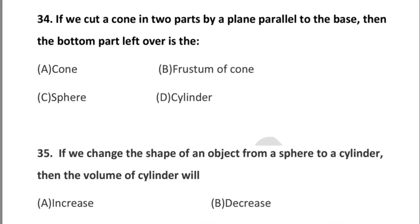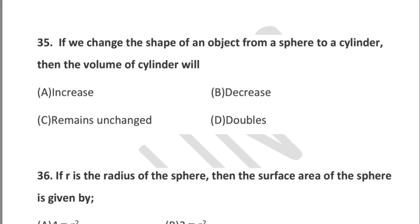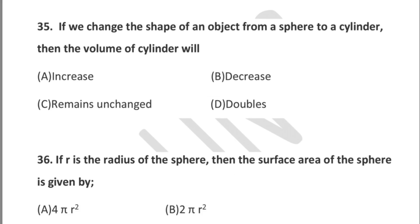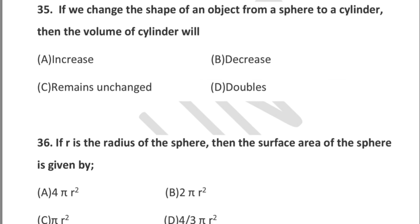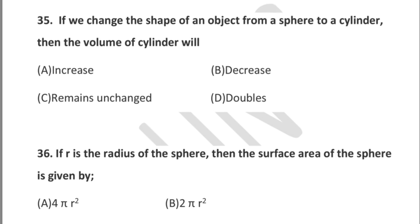Question 35: if we change the shape of an object from a sphere to a cylinder, then the volume of the cylinder will — option A: increase, option B: decrease, option C: remain unchanged, option D: double. Question 36: if r is the radius of a sphere, then the surface area of the sphere is — option A: 4πr², option B: 2πr², option C: πr², option D: (4/3)πr².